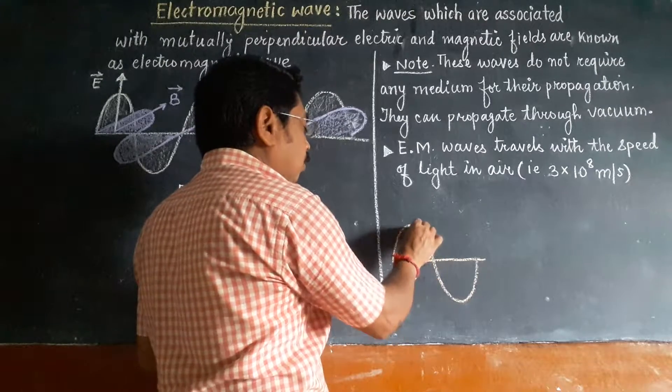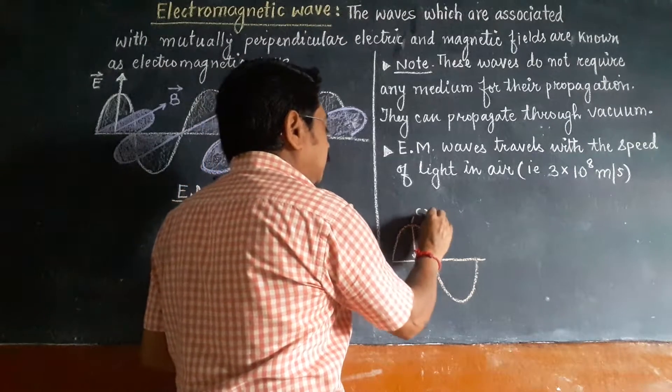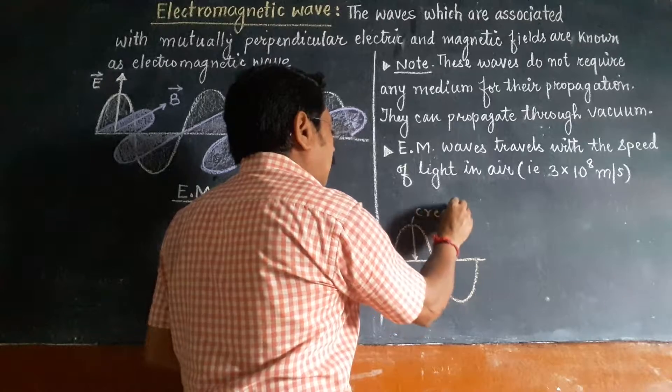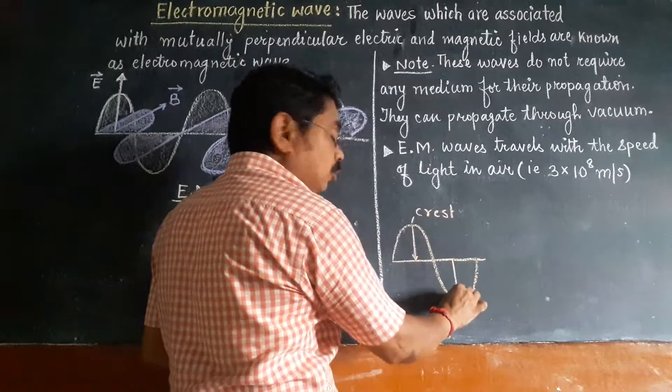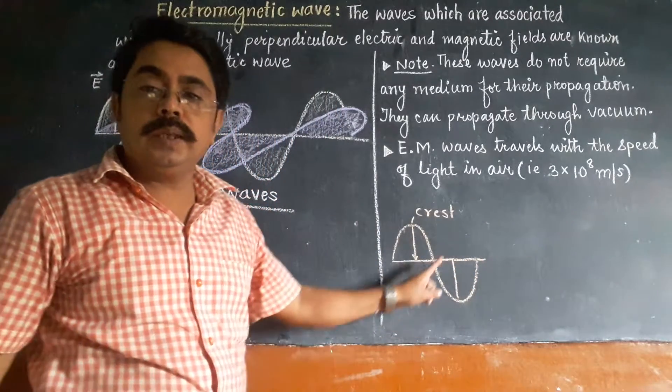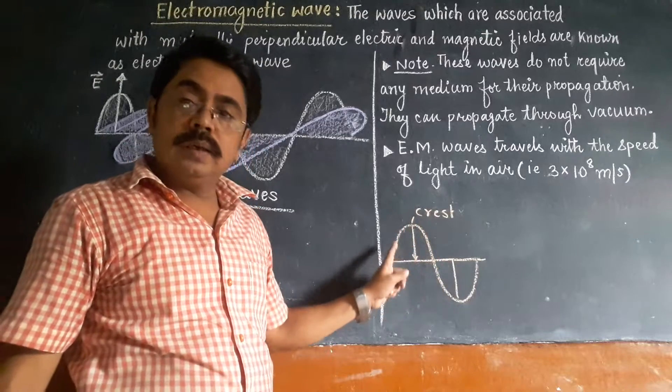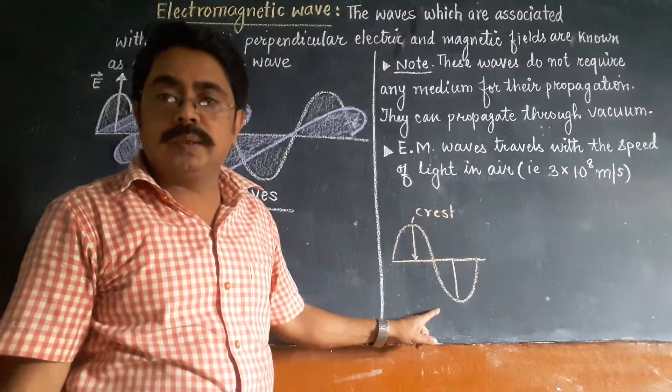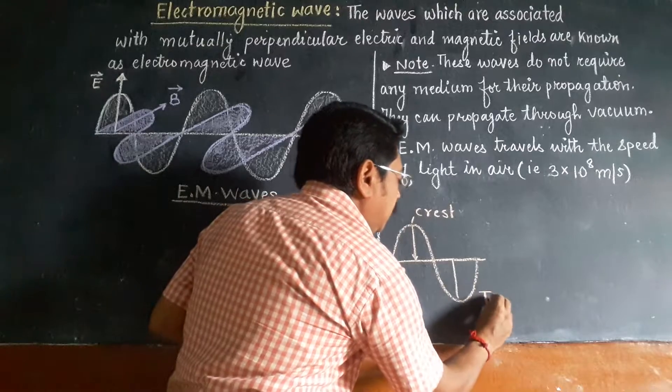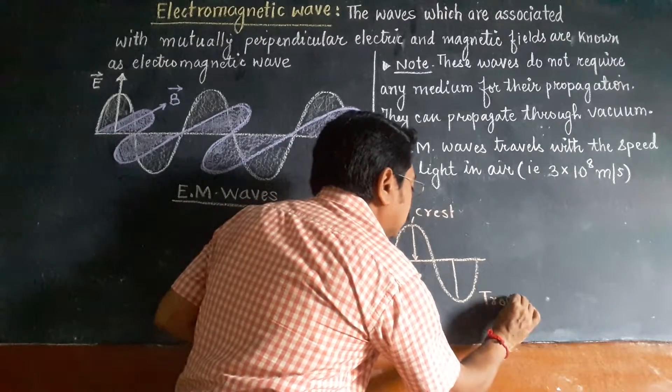The upward portion is called crest. This is crest. And this downward portion, this is called depression. This depression is called trough, T-R-O-U-G-H, trough.